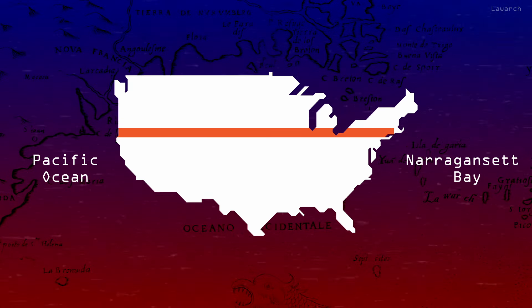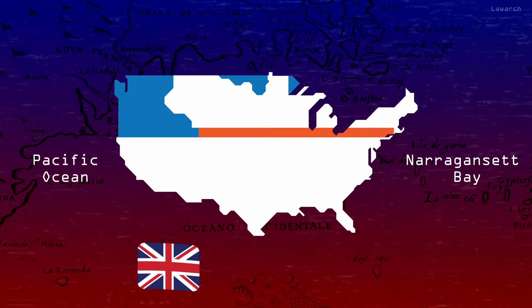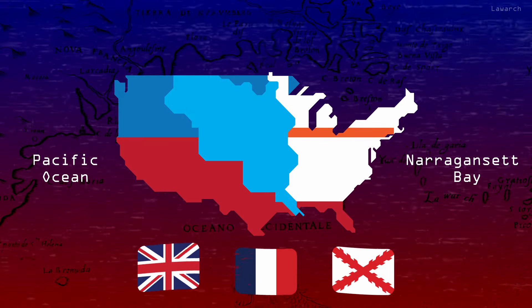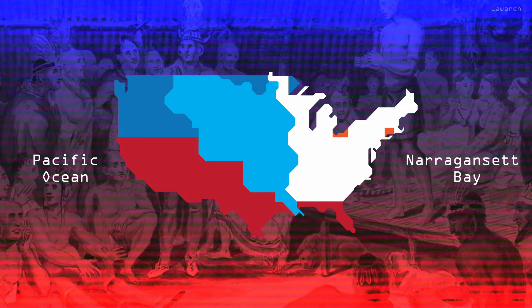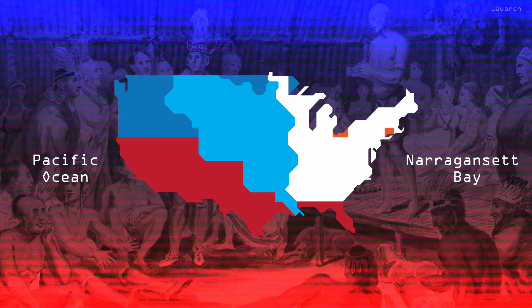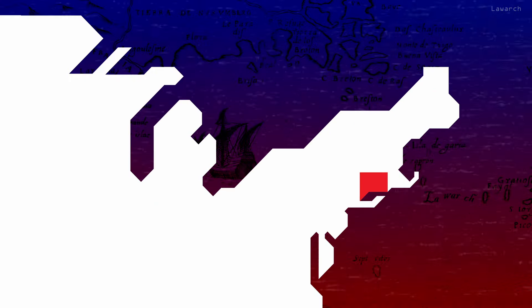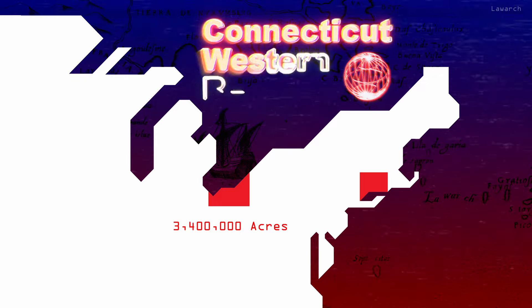However, this vision was stopped by the practicalities of the world at the time, with much of that territory eventually being claimed by rival nations such as England, France, and Spain, as well as other US states, not to mention the thousands of different Native American tribes that had already lived on the land. Despite all these challenges, Connecticut was able to maintain ownership of a large area of land along the southern banks of Lake Erie, known as the Connecticut Western Reserve.